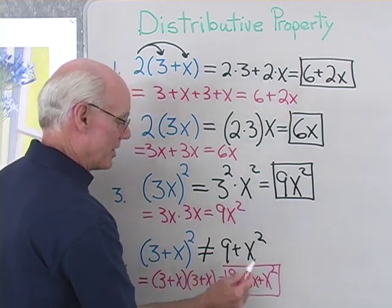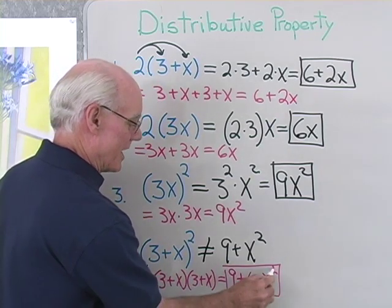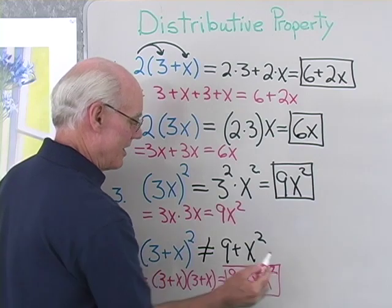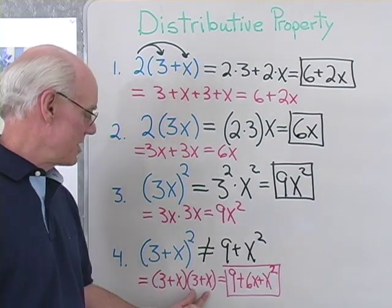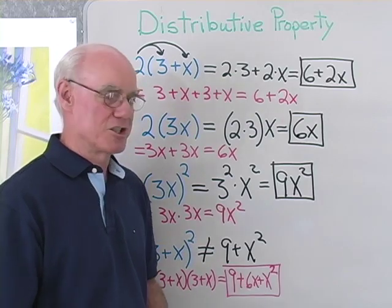So not quite 9 plus X squared. There's that middle term, that 6X term right there that you can't forget. So 3 plus X times 3 plus X is 9 plus 6X plus X squared.